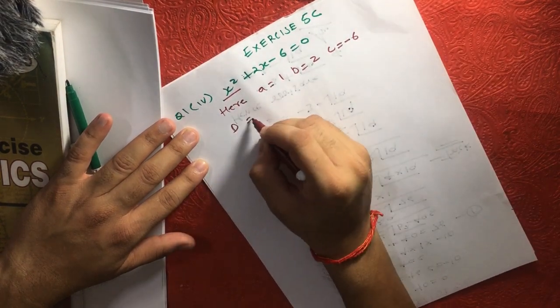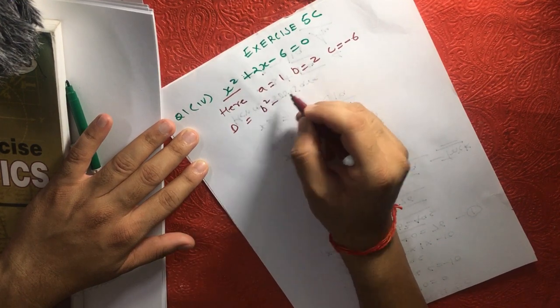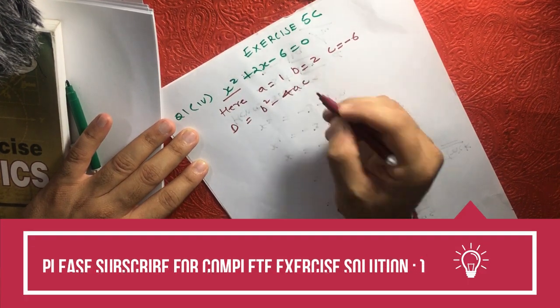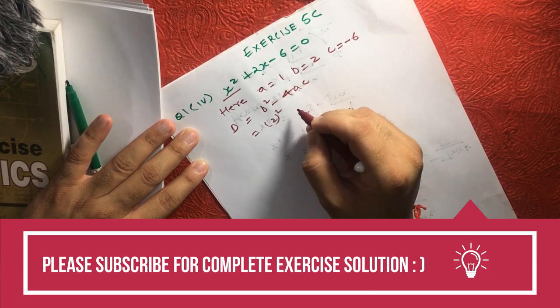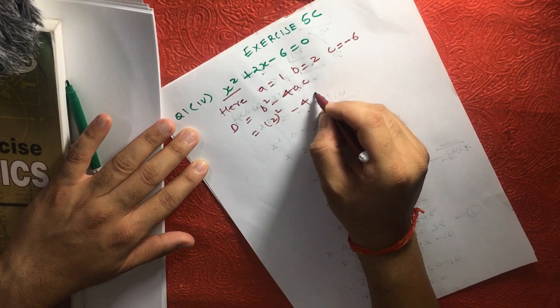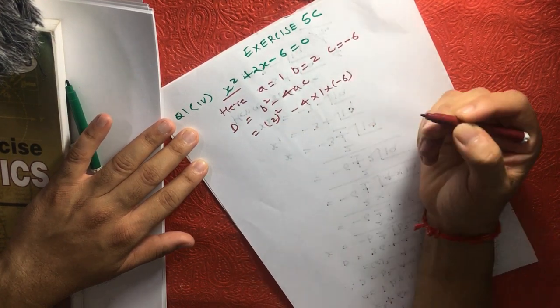So we already know B. Let's say one of the equations is D equals B squared minus 4AC. Here B is 2. So this is 2 squared minus 4 into 1 into minus 6.